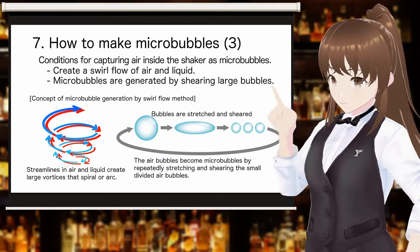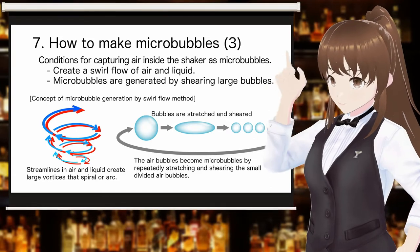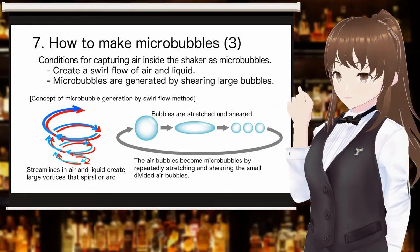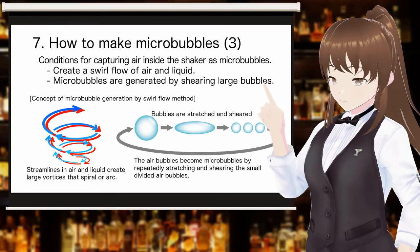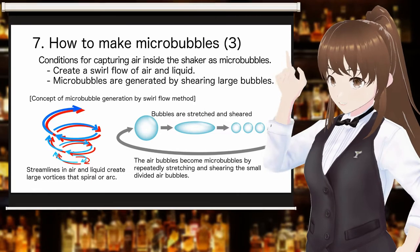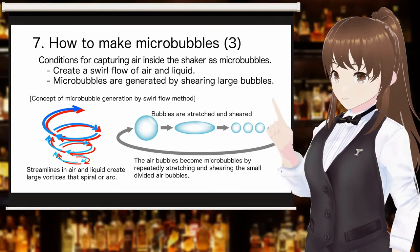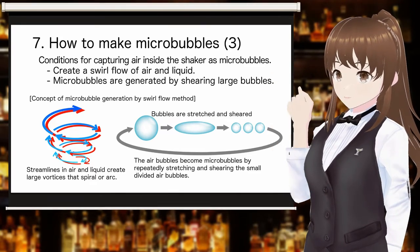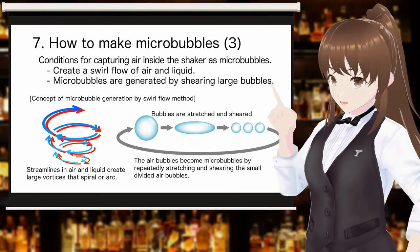In order to capture the air inside the shaker as microbubbles, it is necessary to create a swirl flow between the air inside the shaker and the liquid cocktail ingredients. In the vortex created by swirl flow, large bubbles are stretched and then sheared, which breaks them up into smaller bubbles. By repeating the splitting of air bubbles by this shearing, the air bubbles inside the shaker change into microbubbles.